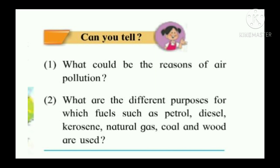What are the different purposes for which fuels such as petrol, diesel, kerosene, natural gas, coal, and wood are used? Petrol and diesel are used as fuel in vehicles used for transport — two-wheelers, cars, trucks, and aeroplanes run on these fuels. Kerosene, cooking gas like LPG, and wood are used as fuels for cooking and other domestic use. Coal is used for generating electricity and in industrial processes. Diesel is also used to run engines and machines in factories.